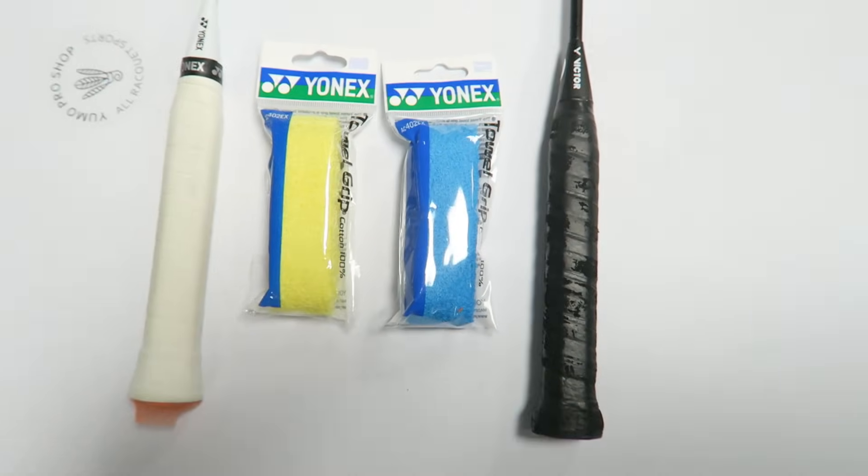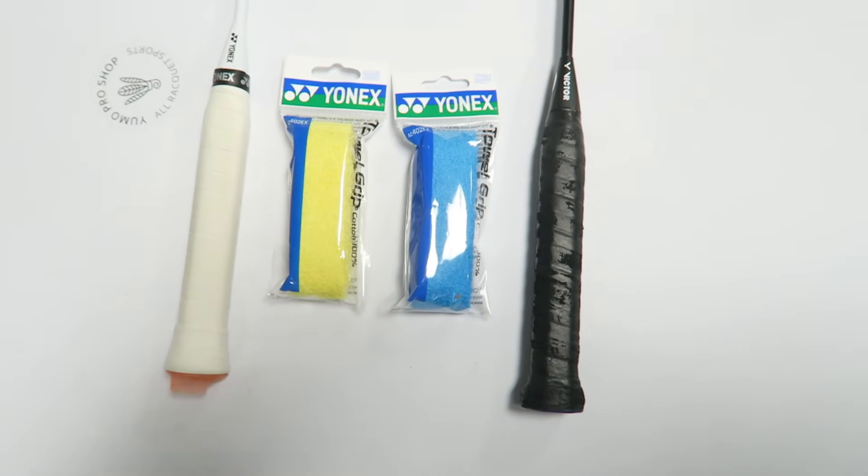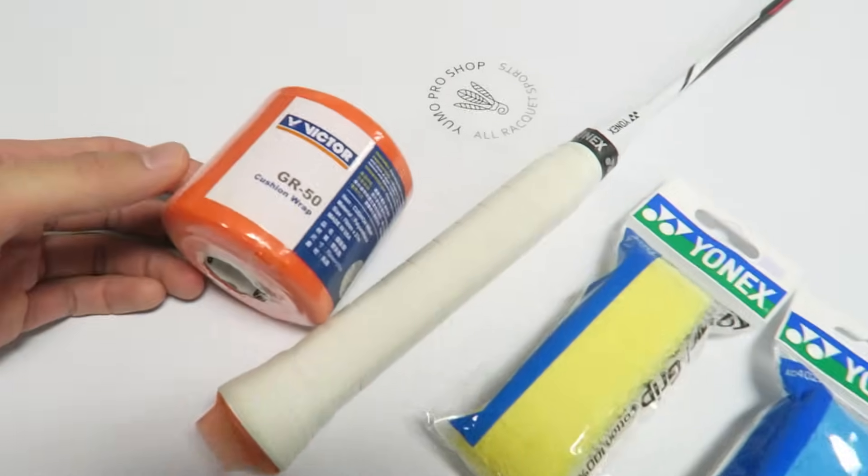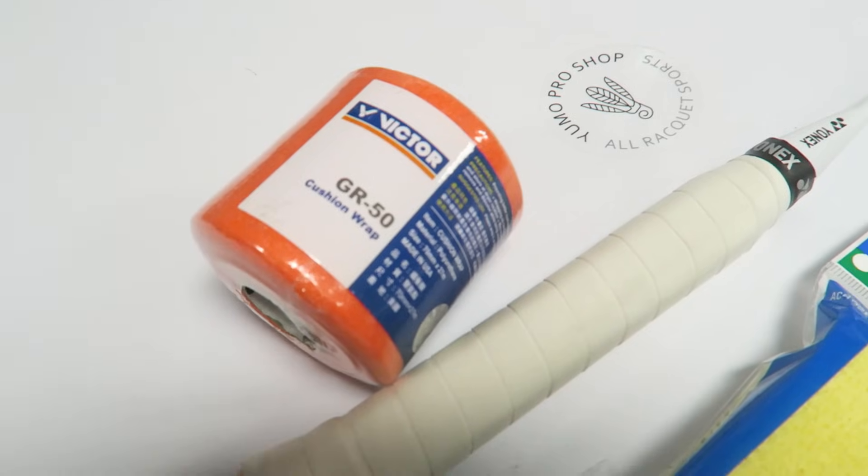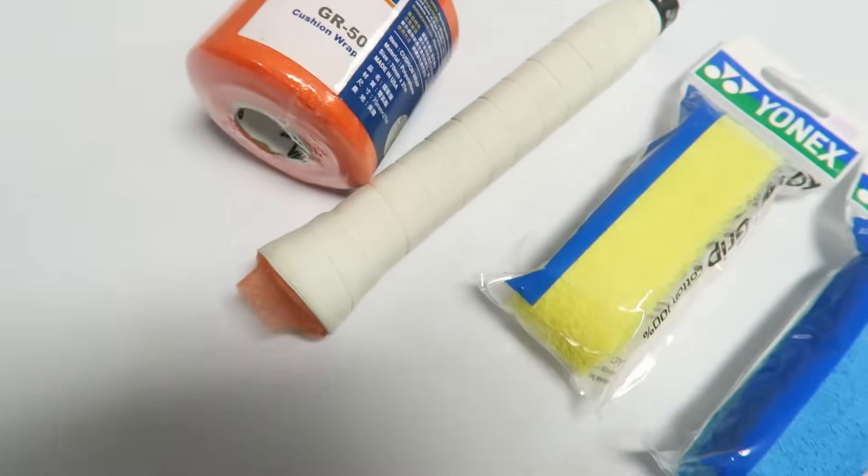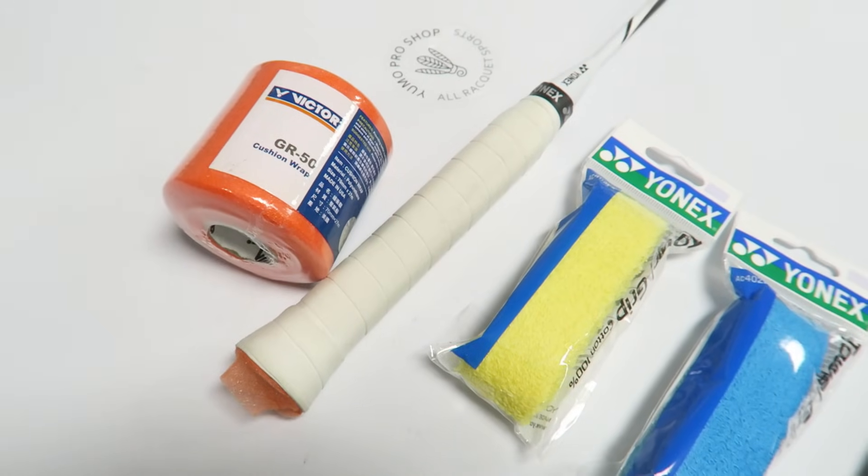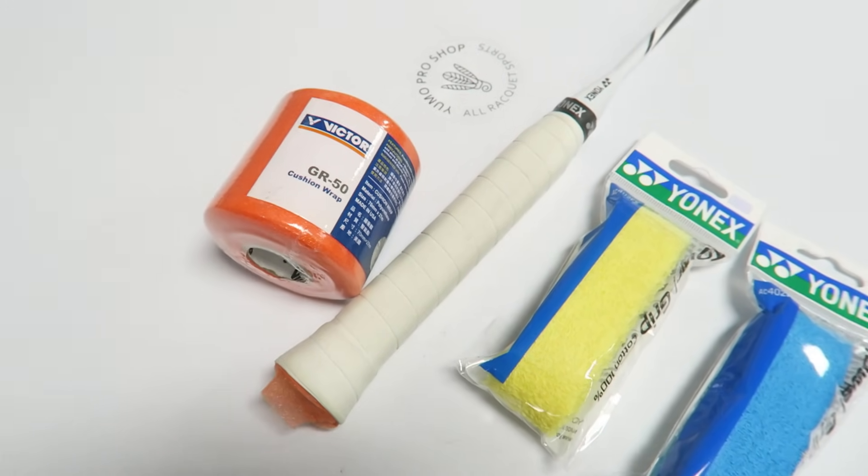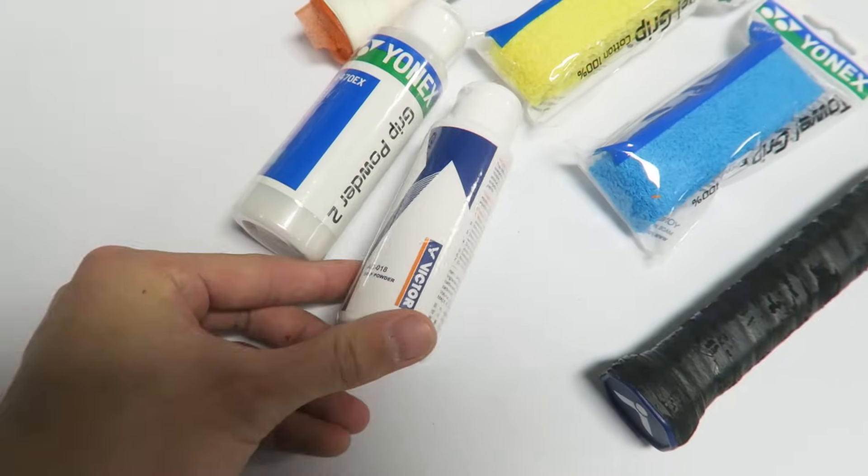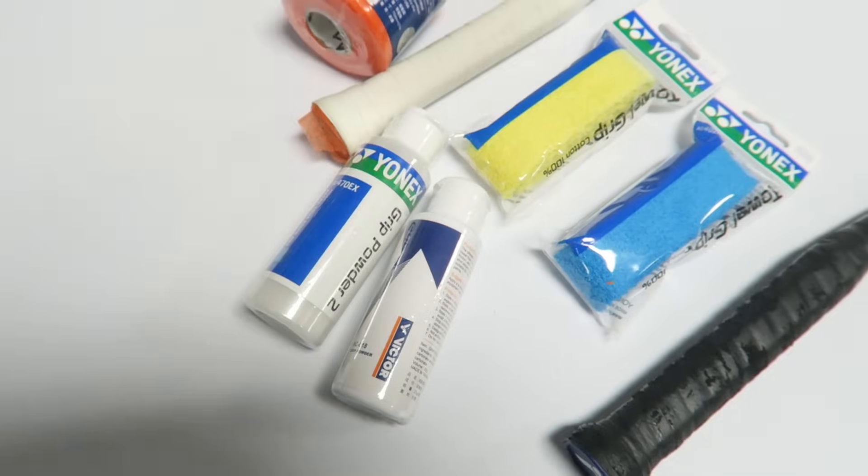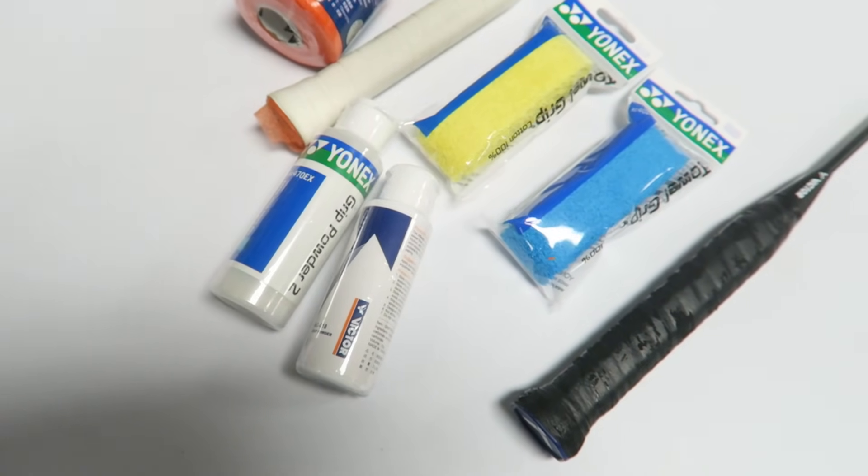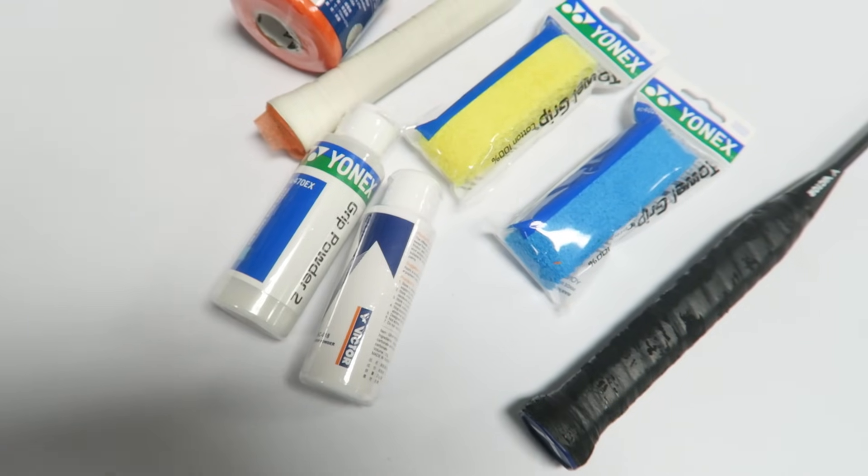To solve these two problems you can use a cushion wrap underneath the towel grip such as the Victor GR50. This will give you more cushioning and provide more comfort for your hands. To solve the slipperiness of the grip you can use the grip powder that's available from Yonex and Victor. The grip powder will absorb the sweat from your hands and give you a bit more grip onto the handle so that it does not slip around.